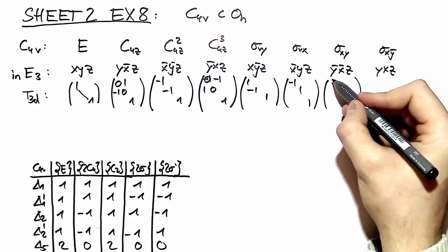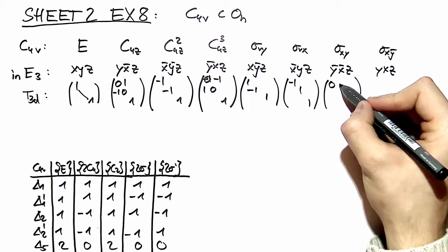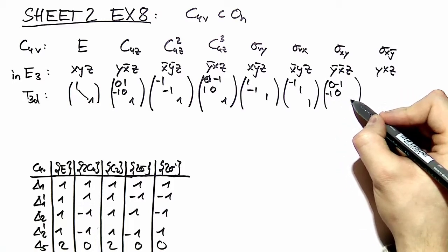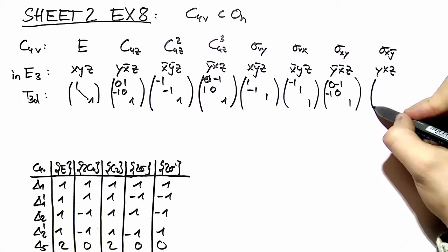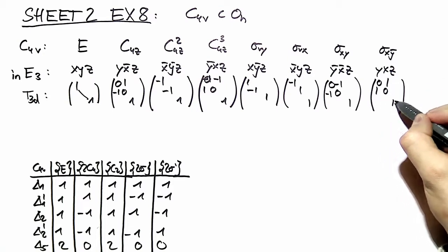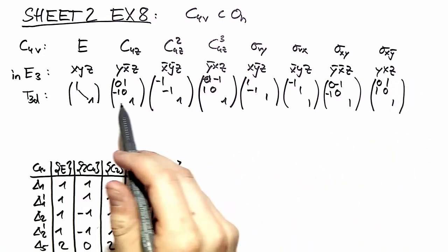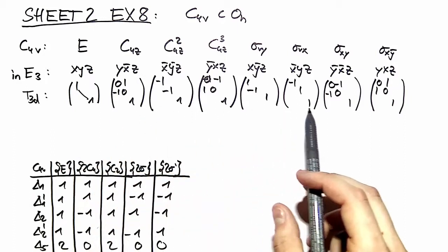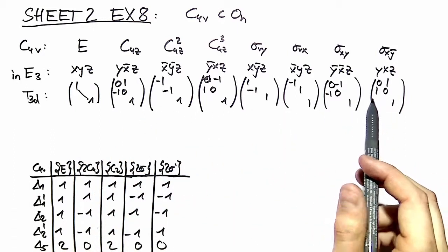When we mirror at the diagonal, we either exchange the x and y coordinates and negate them, or we just exchange them. This is it—this is the three-dimensional representation of C4V.